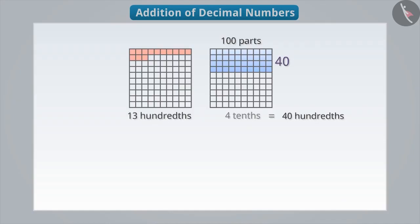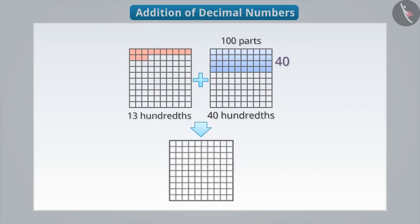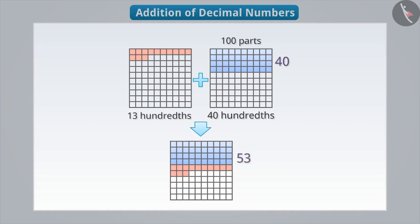Now we have 13 hundredths and 40 hundredths. So what will their sum be? If we place the shaded parts of both squares in one square, then we can say that there are 53 shaded parts out of 100. Which means that the sum of 13 hundredths and 40 hundredths is 53 hundredths.